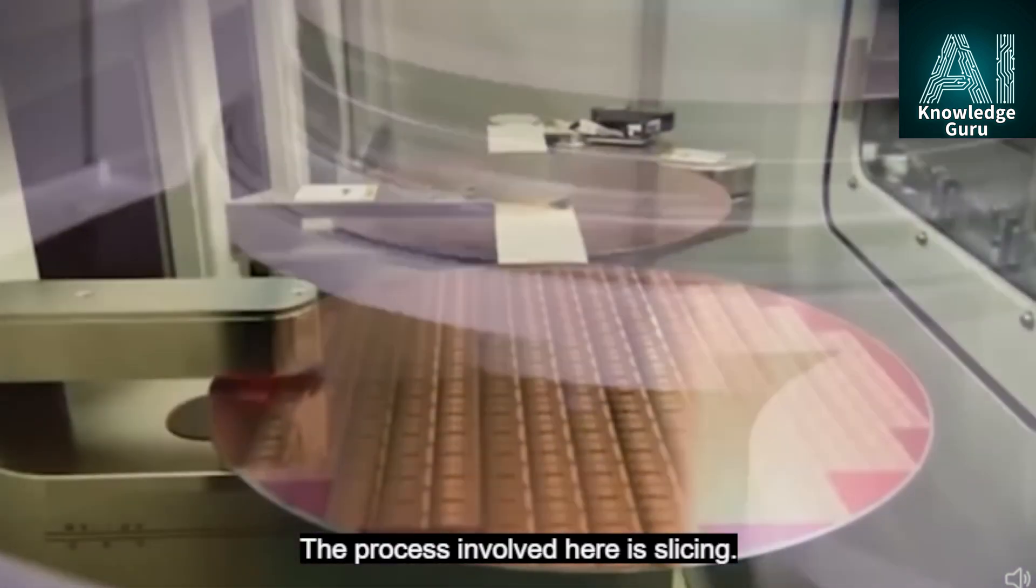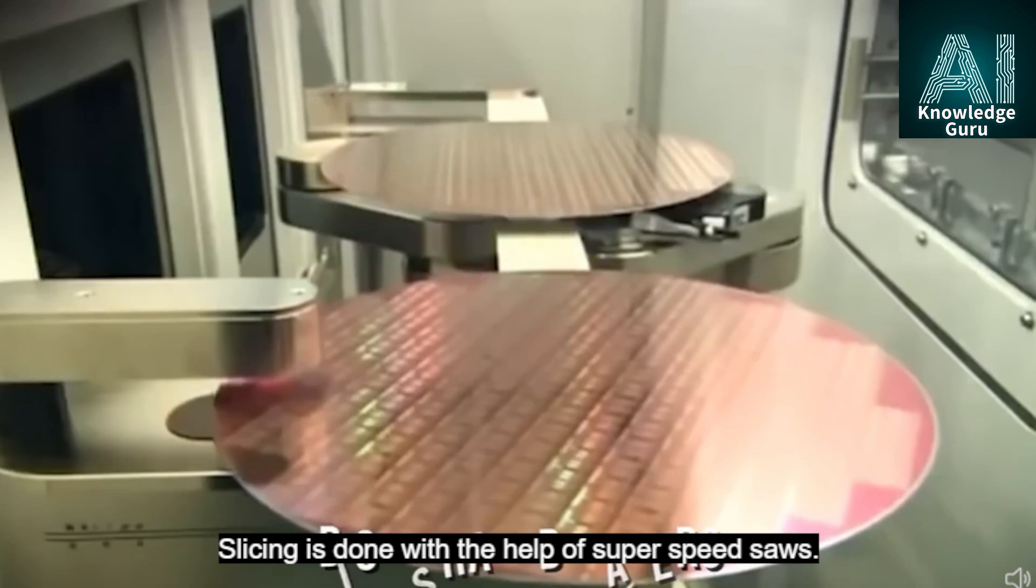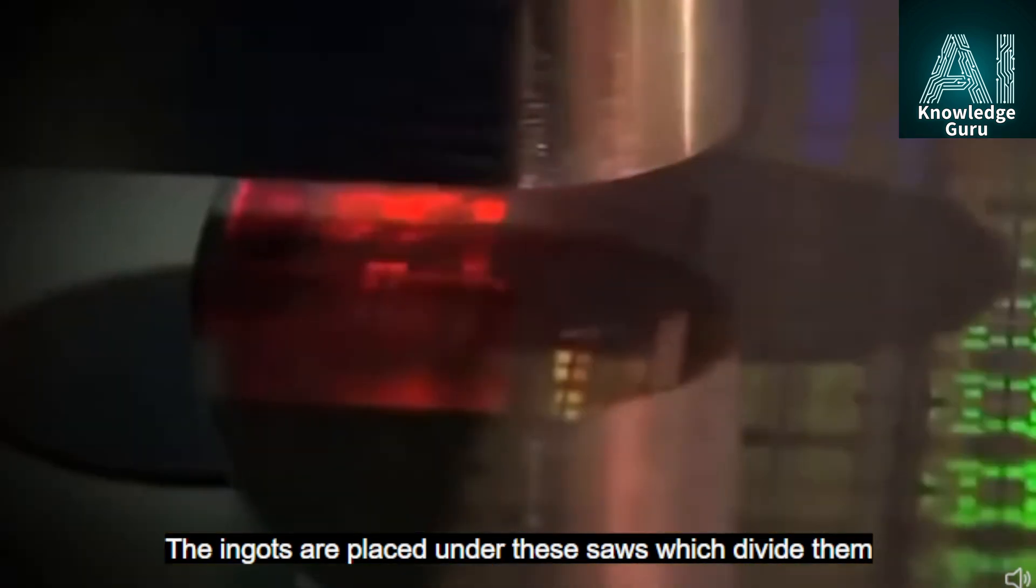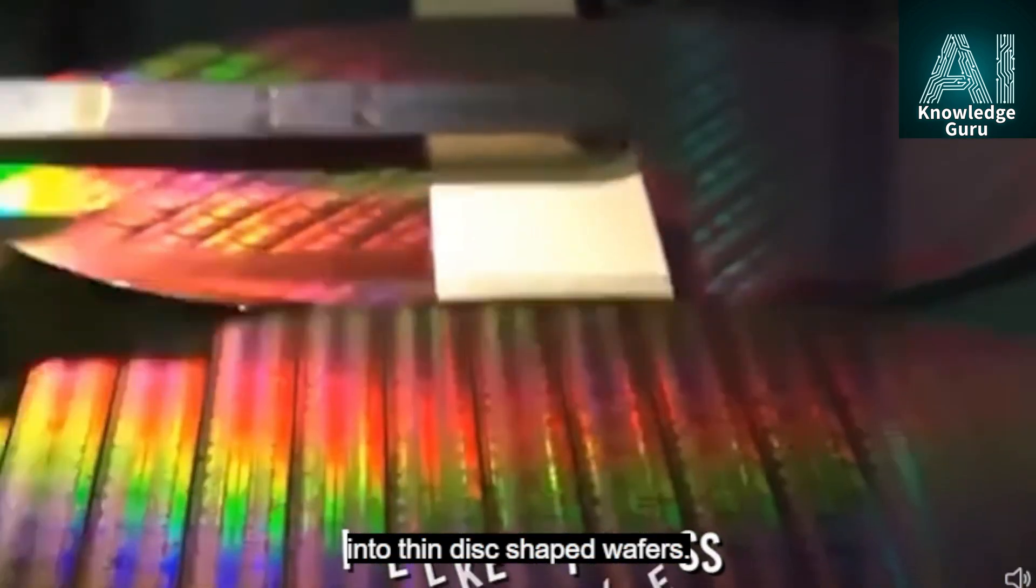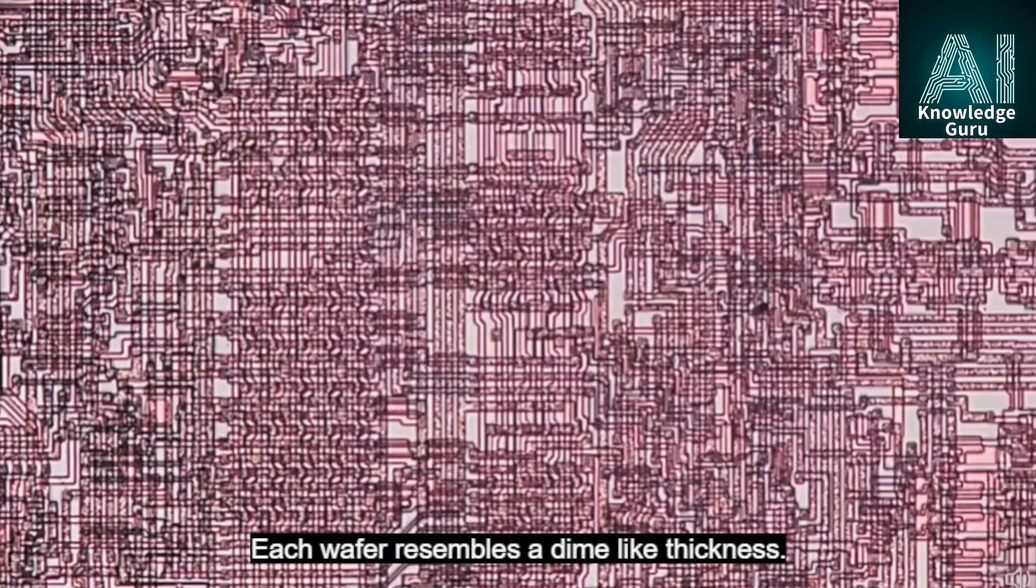The ingot produced is ultimately converted to wafers. The process involved here is slicing. Slicing is done with the help of super-speed saws. The ingots are placed under these saws which divide them into thin disc-shaped wafers. Each wafer resembles a dime-like thickness.